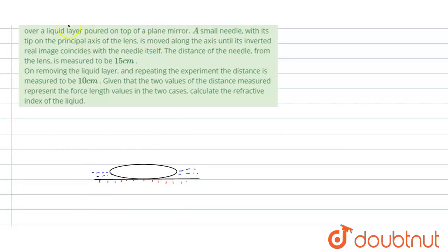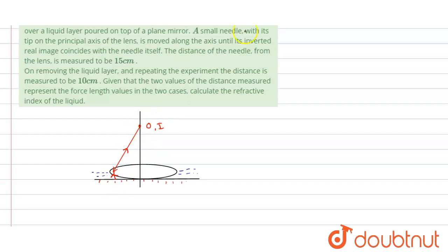Now on the principal axis of this lens, we draw the principal axis and place an object. It is given that the image is formed on the object itself. For that, the light should retrace its path, which happens when it strikes the mirror normally. That means the light rays, after striking the mirror, would be going parallel. Parallel light rays converge at the focus — so in the first case the distance of 15 centimeters is the focal length of the combination of the lens and the liquid layer.